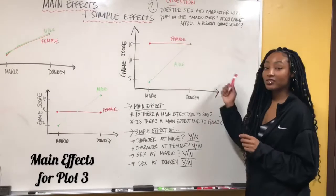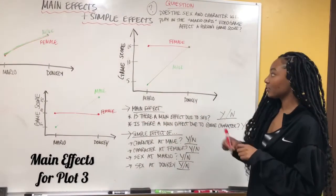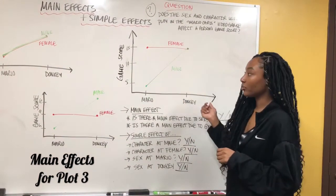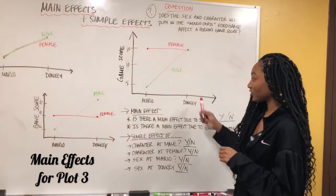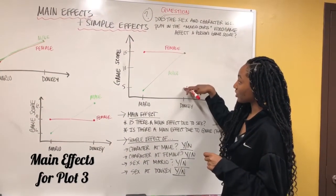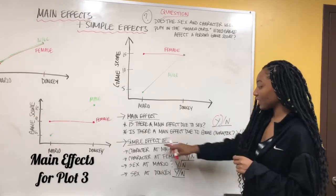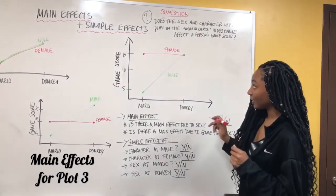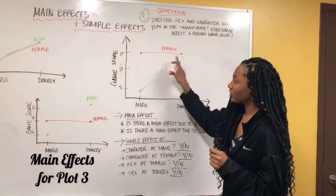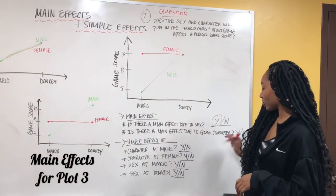Now we're going to look at our last graph. Is there a main effect due to sex? If the graph were parallel and overlapping like the first one, there would be no interaction. But since we do have an interaction, there is a main effect due to sex because the sexes scored differently based on the characters. They score the same using Donkey, but the male went up from Mario to Donkey. Is there a main effect due to game character? Yes, because from Mario to Donkey, males increased from 5 to 15. Females didn't change, but because the males increased overall we do have a main effect of game character.